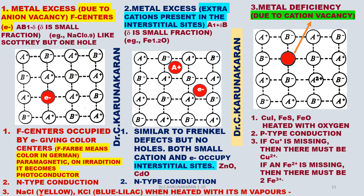For example, sodium chloride is white in color, but when heated with sodium vapor, it becomes colored due to the formation of F-centers. Similarly, potassium chloride is white in color, but when heated with potassium vapor, it forms defects and becomes colored.